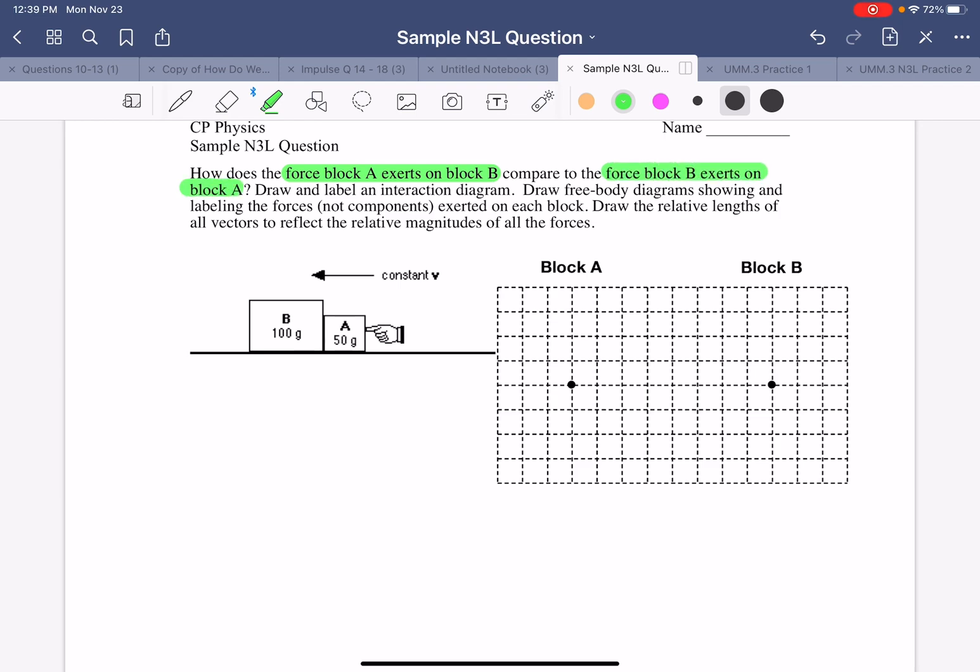So I have two blocks moving at a constant velocity. I hope you remember that in order for something to move at a constant velocity, it has to have balanced forces.